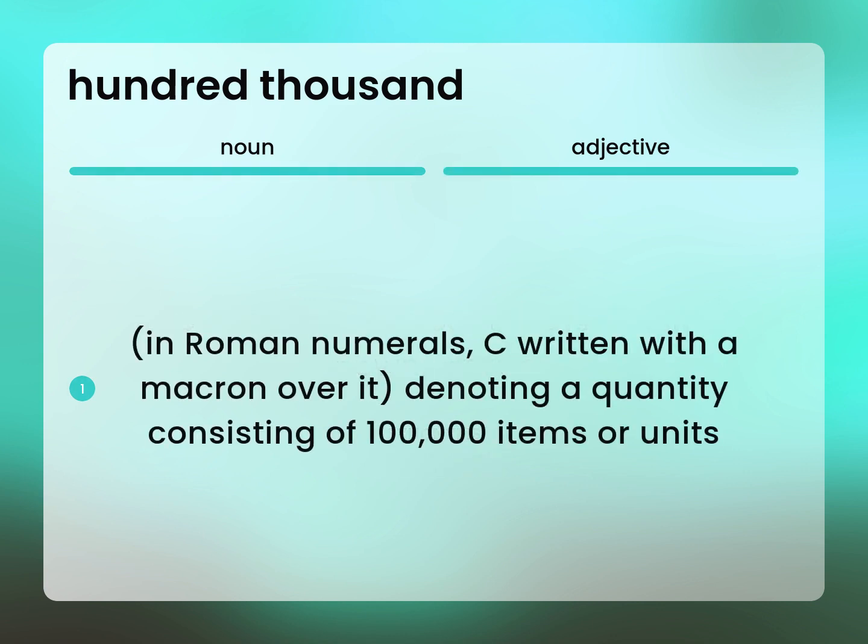In Roman numerals, C written with a macron over it, denoting a quantity consisting of one hundred thousand items or units.